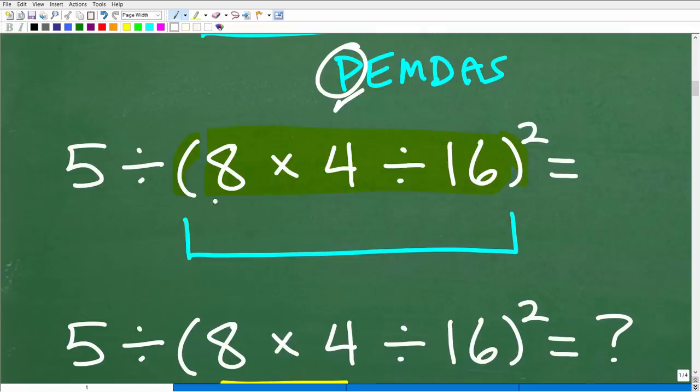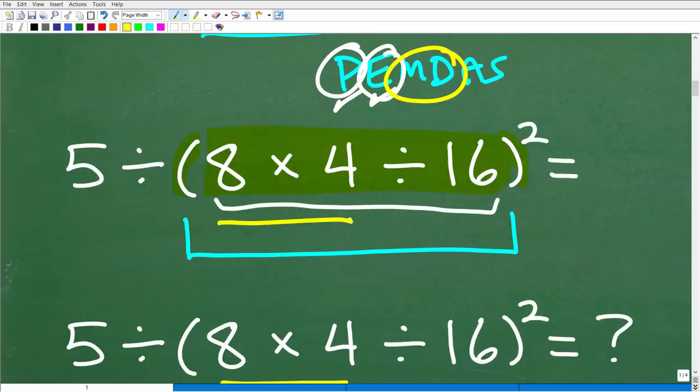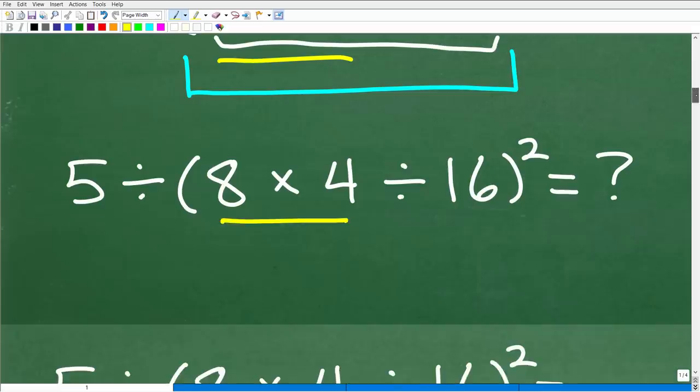And another little comment here is this problem that I'm doing is kind of a basic problem when it comes to the order of operations. You really need to get good at this. So, you want to challenge yourself by doing more challenging problems. But anyways, we do have a set of parentheses. So, we're going to focus on what's inside of the parentheses first. Okay, so we have 8 times 4 divided by 16. So, that's what we're going to be thinking about next. Are there any powers inside the parentheses? No, there isn't. Is there any multiplication and division? Yes, there is.